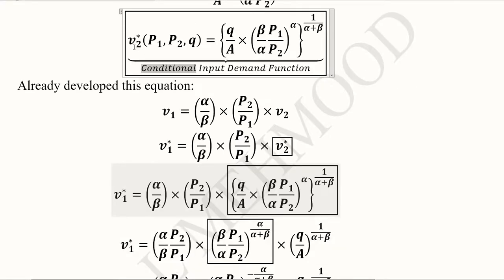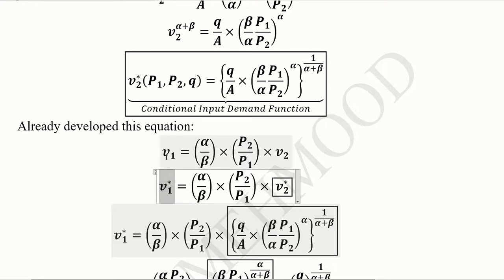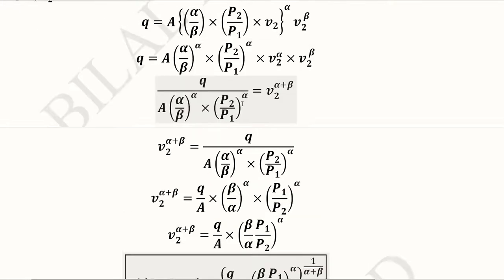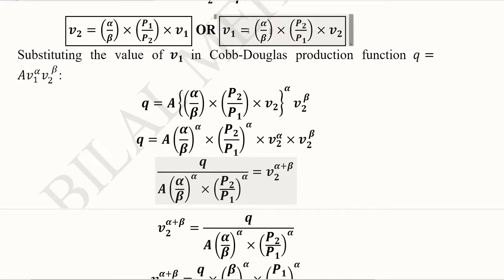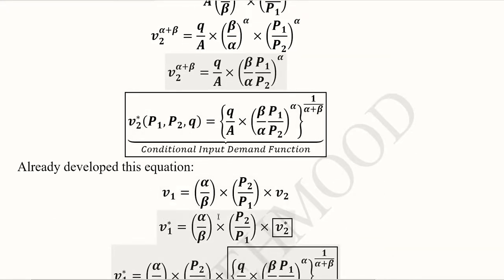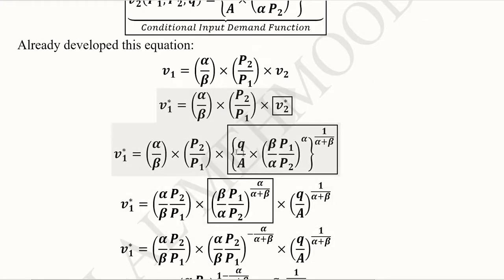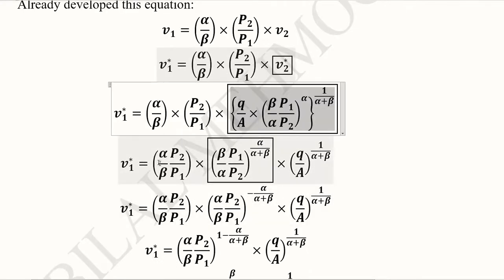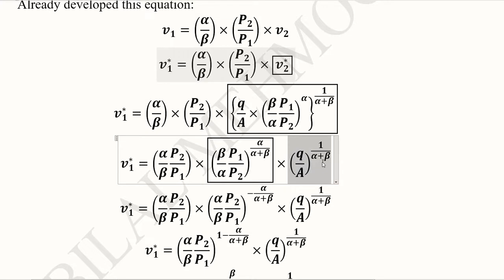After developing V2 as its optimal value, we can develop V1 optimally by recalling the equation developed above that expresses V1 in terms of V2. Substituting V2 optimal into that equation gives us V1 optimal. We take this value of V2 optimal that we just derived and substitute it in, separating out the term Q over A raised to the power 1 over alpha plus beta.